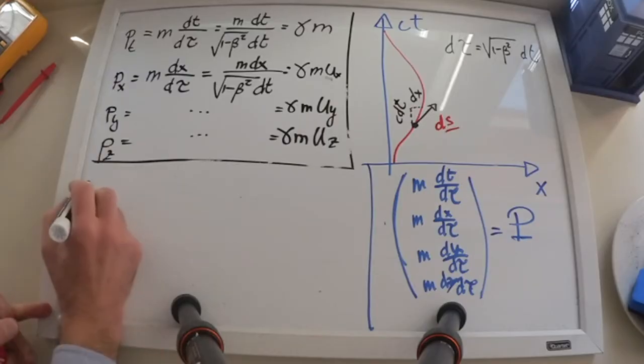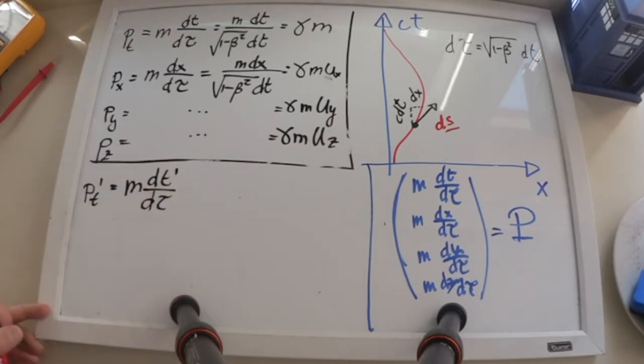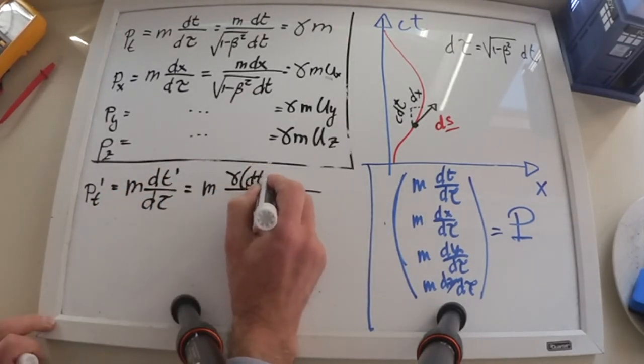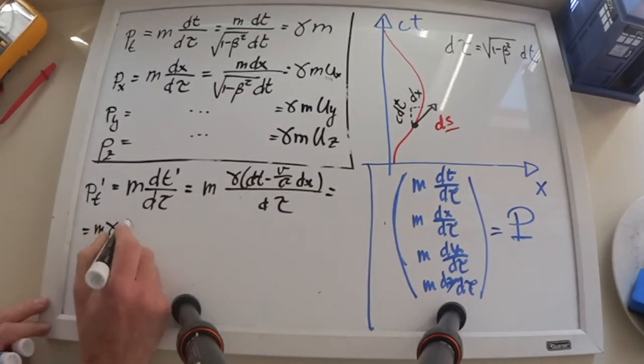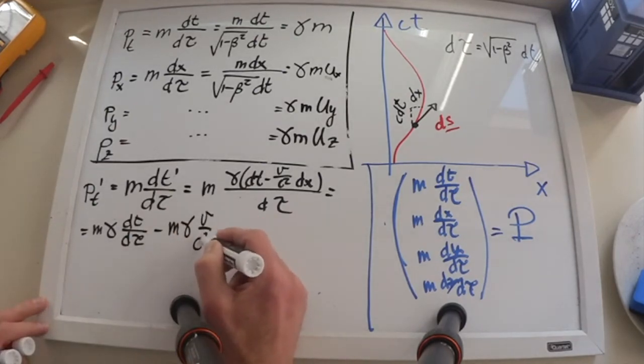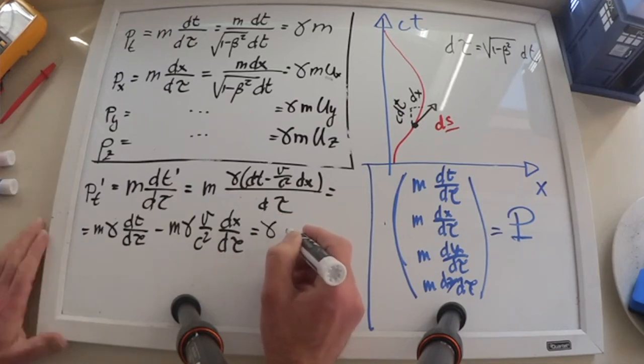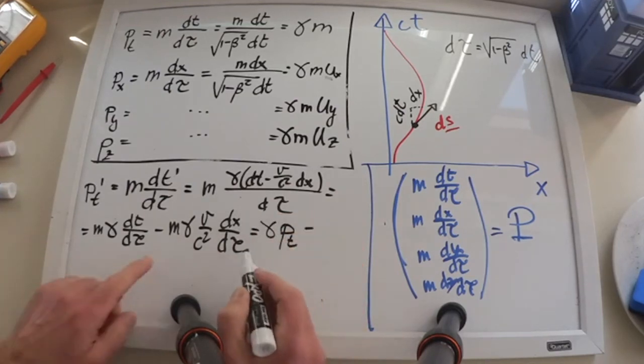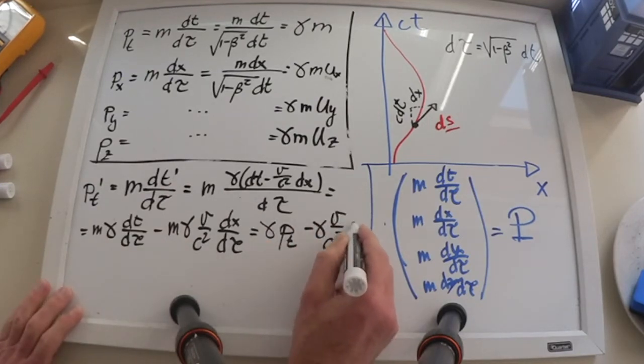Something we can do now is to write the full momentum in the primed reference frame. p sub t prime is m dt prime over d tau. But dt prime is gamma times dt minus v over c squared times x, which is gamma m times dt over d tau minus gamma mv over c squared dx over d tau. But this first term here is gamma p sub t, and this second term here is minus gamma v over c squared p sub x.